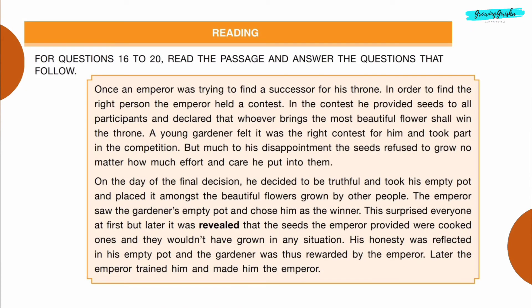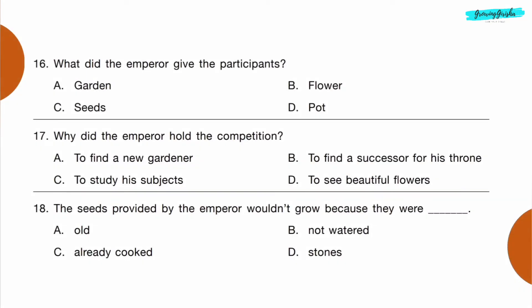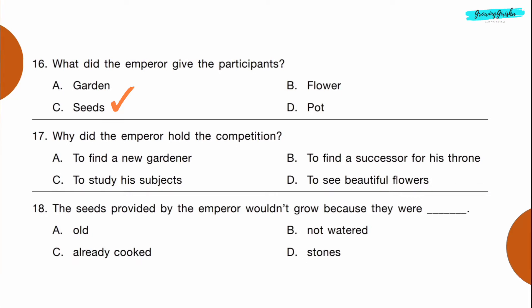Reading: For questions 16 to 20, read the passage and answer the questions that follow. You can pause the video if you need more time. Question 16: What did the emperor give the participants? Option C: seeds.